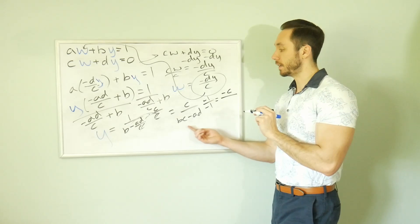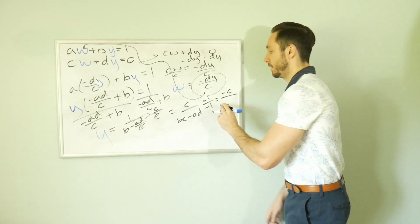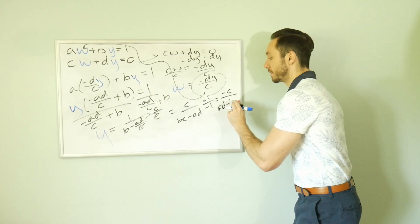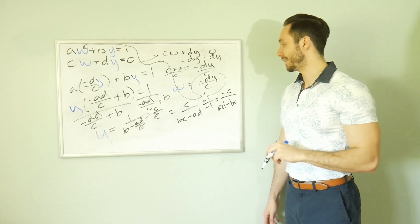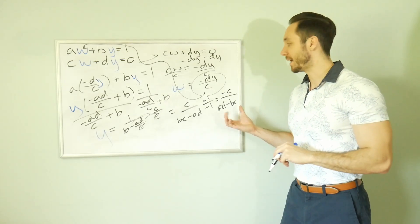We're multiplying by negative 1 over negative 1. So this is actually going to turn into negative C over. Well now it's going to be a negative BC. And it's going to be a positive AD. So it will be AD minus BC. There it is. That's the thing we like again. That determinant down in the bottom.